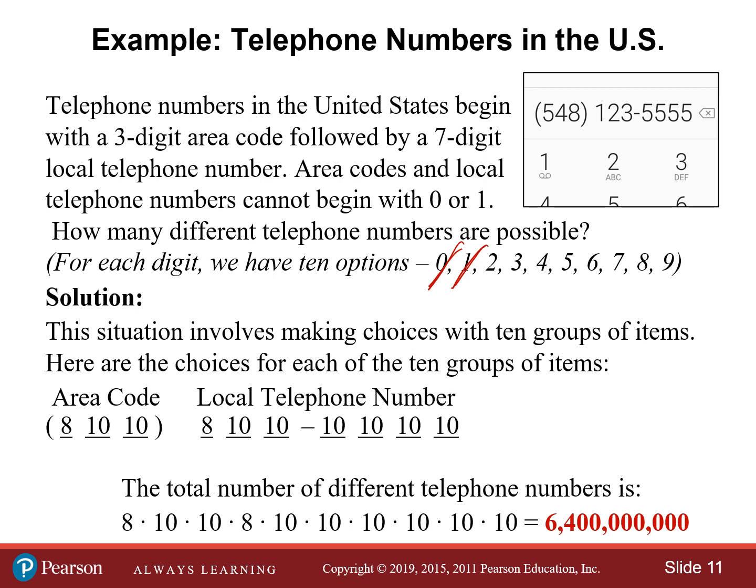That's amazing. The fast way to calculate that is to take eight times eight, which is 64, and then count the number of tens in the problem — there are eight of them. So that means we need eight zeros after the number 64, giving us 6,400,000,000 different telephone numbers.